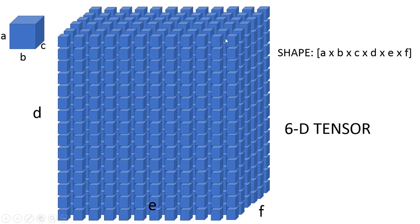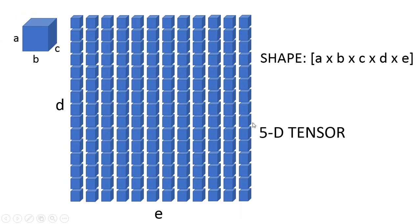Here is one more example — this is a cube of cubes, a 6D array of shape A by B by C by D by E by F. The three dimensions of a single cube and the three dimensions of this larger cube make it a 6D tensor. Basically, instead of calling it a 1D array, 2D array, matrix, cube, or vector, TensorFlow identifies a particular array as a tensor — you can relate to a tensor as an N-dimensional array.